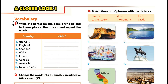Vocabulary. Activity 1. Write the names for the people who belong to these places. Then listen and repeat the words. 1. The USA — the Americans. 2. England — the English. 3. Scotland — the Scottish / the Scots. 4. Wales — the Welsh. 5. Ireland — the Irish. 6. Canada — the Canadians. 7. Australia — the Australians. 8. New Zealand — the New Zealanders.